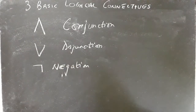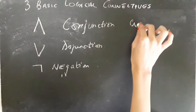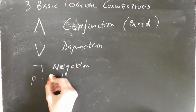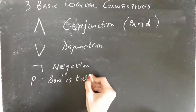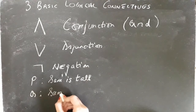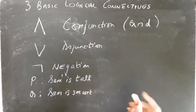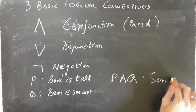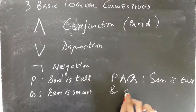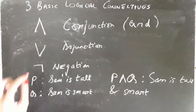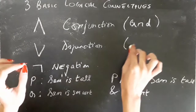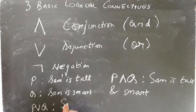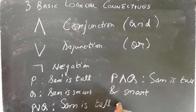The conjunction logical connective can easily be interpreted as AND. For example, if there are two propositional statements — P: Sam is tall, and Q: Sam is smart — then P and Q is: Sam is tall and smart. The second logical connective, disjunction, can be interpreted as OR. P or Q is: Sam is tall or smart.